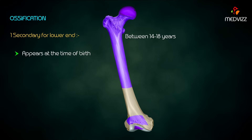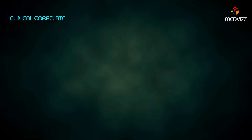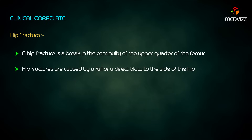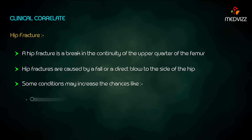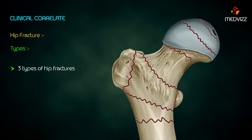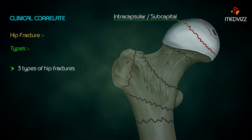One secondary center for the lower end appears at the time of birth and unites with the shaft at around 20 years. Clinical correlation — hip fracture: a hip fracture is a break in the continuity of the upper quarter of the femur. Hip fractures are caused by a fall or a direct blow to the side of the hip. Conditions that may increase the chances include osteoporosis, cancer, and nutritional deficiencies. There are three types of hip fractures.